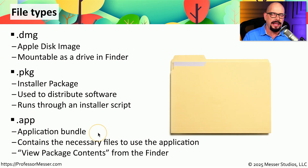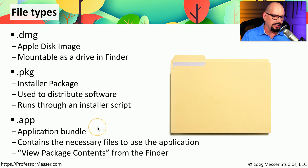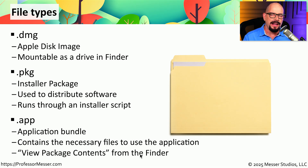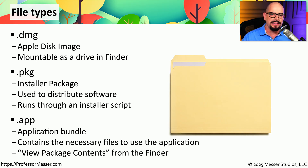APP stands for the application bundle. This is a little bit different than an executable, because an app file contains many different files inside of it — it is indeed a bundle. You can view this bundle of files by right mouse clicking in the Finder and choosing View Package Contents. So although you're double clicking on this app file to start an application, it's really accessing a number of different files held within this application bundle. From the end user's perspective, they never see this bundle of files; all they see is the .app file, and they can double click it to start their application.